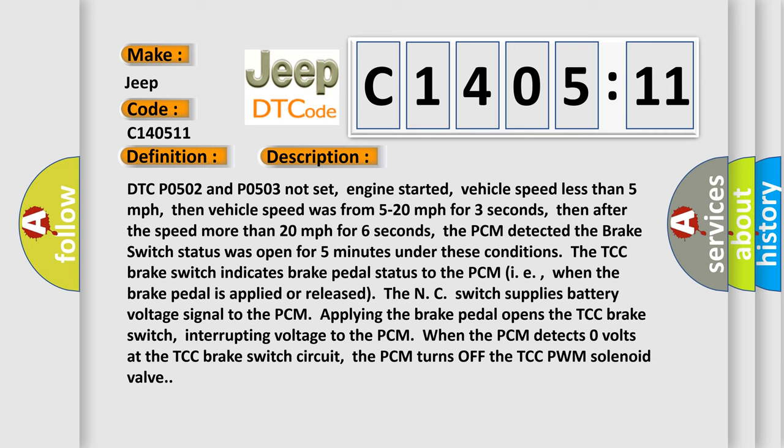Under these conditions, the TCC brake switch indicates brake pedal status to the PCM. When the brake pedal is applied or released, the NC switch supplies battery voltage signal to the PCM. Applying the brake pedal opens the TCC brake switch, interrupting voltage to the PCM. When the PCM detects zero volts at the TCC brake switch circuit, the PCM turns off the TCC PWM solenoid valve.